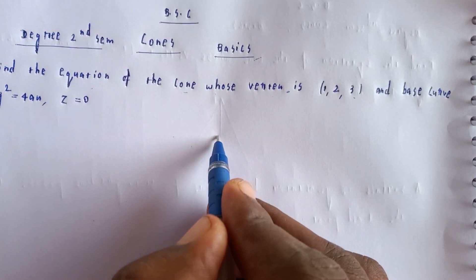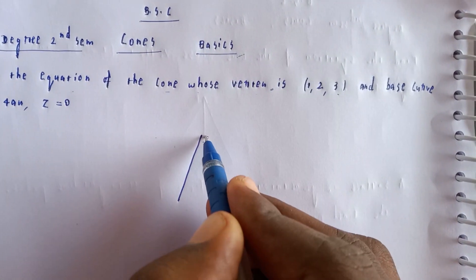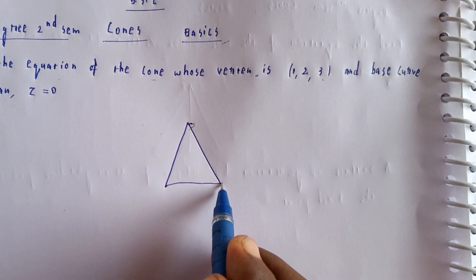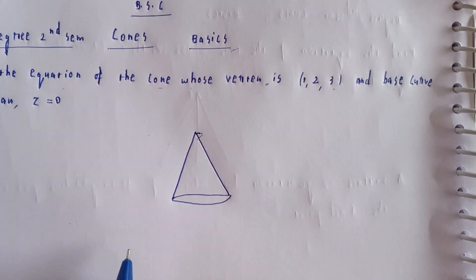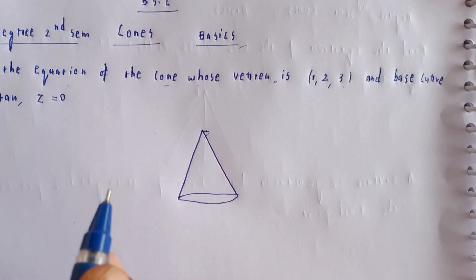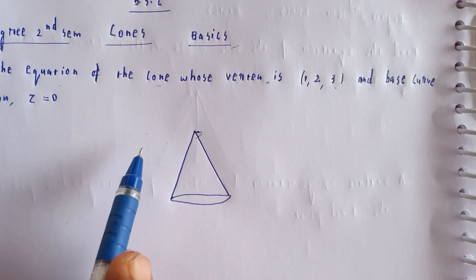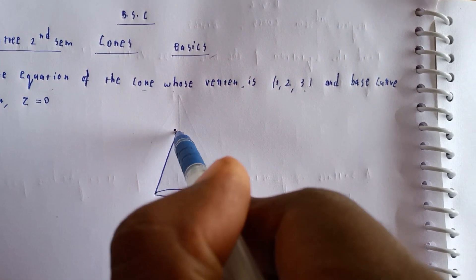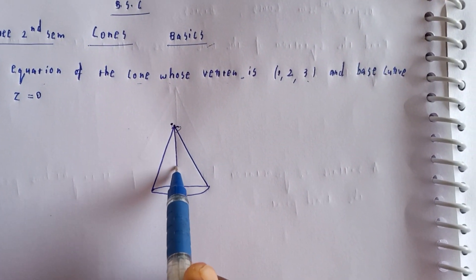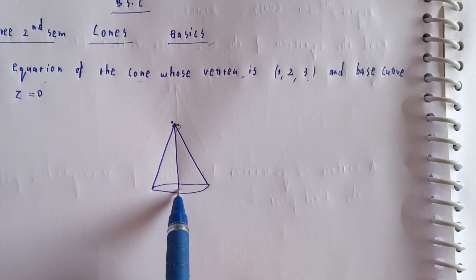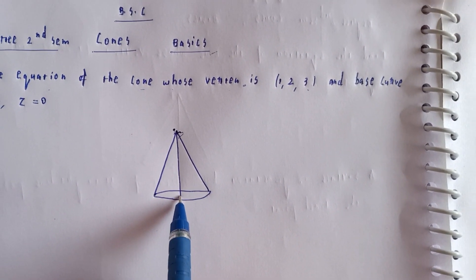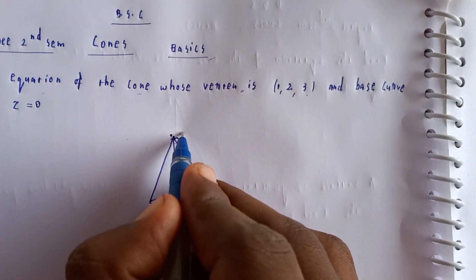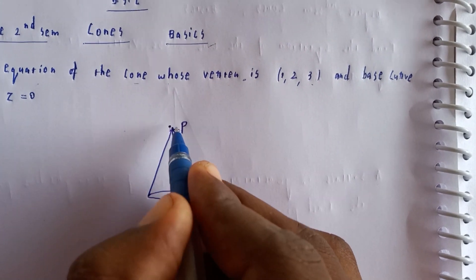Let's understand what a cone is. A cone is a surface generated by the locus of straight lines that passes through a fixed point called the vertex.